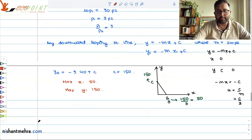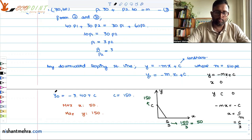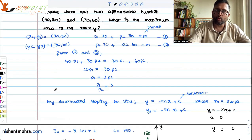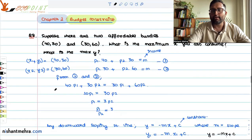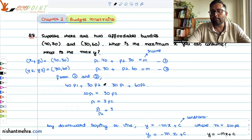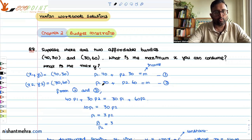Write this example in your register. So I hope you understood the question and try to do this in your notes. You understood that in case two affordable bundles are given to you, you can write what the budget constraint is and you can also write what is the amount of maximum x and maximum y you can have. We'll do one more application of budget constraint in the next class. Thank you.